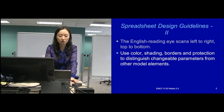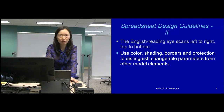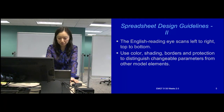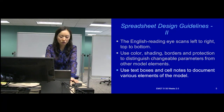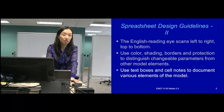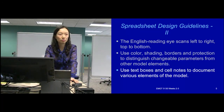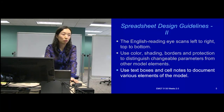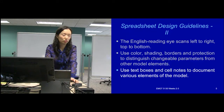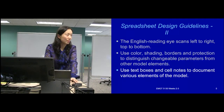Any place with decision variables, objective function, and constraints — we usually shade them in different colors. Use text boxes and cell notes to document those different elements, especially when the Excel model becomes really big and complex. Putting comments and cell notes is very helpful not only for other people to understand your spreadsheet, but also for yourself to remember.